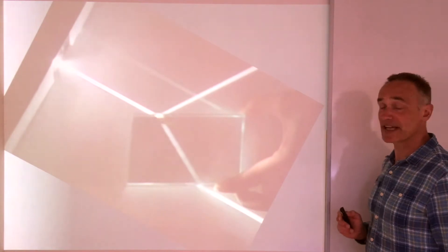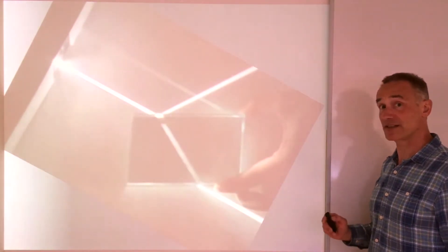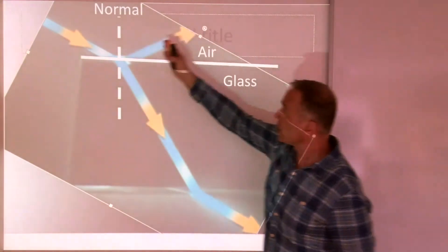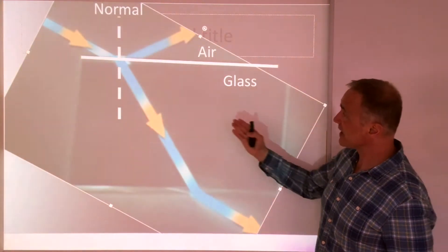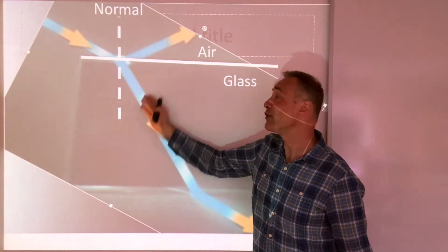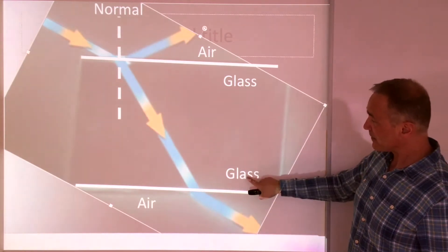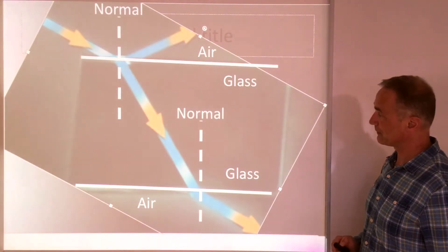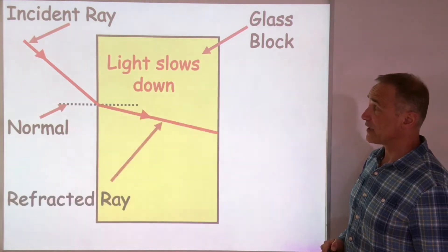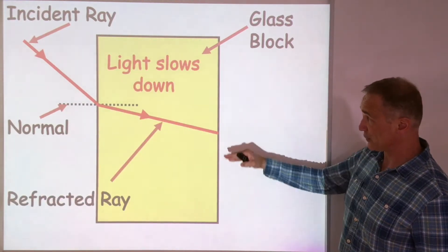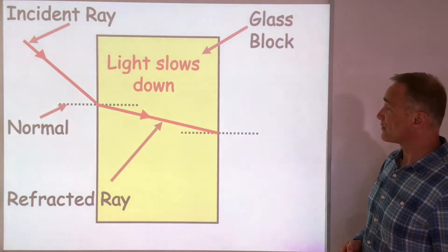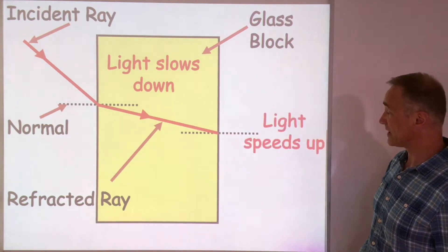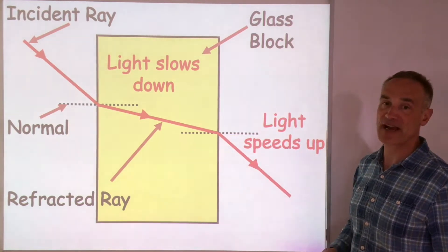Now watch this quick video which shows what happens to light when it goes into glass. This is our air-to-glass boundary, with a normal at right angles to the boundary. You can see that light bends — refracts — towards the normal because it slows down going into glass. Then going from glass back into air, it bends away from the normal as it speeds up again. The refracted ray bends towards the normal entering the glass, and the angle of refraction is bigger coming back out into air.